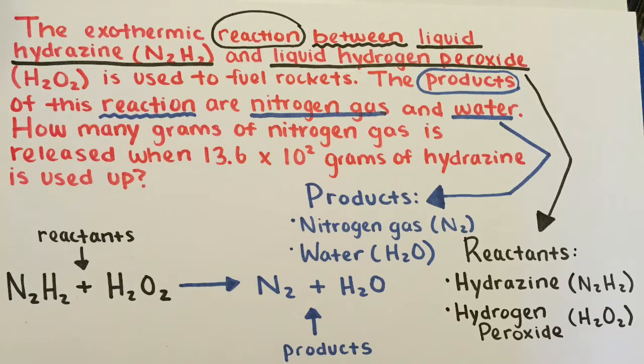To begin, let's identify the reactants and the products so we can write out a chemical equation. We know the reactants are hydrazine and hydrogen peroxide because the question verifies a reaction between them. The products are nitrogen gas and water because the question also states they are a result of the reaction.